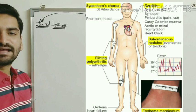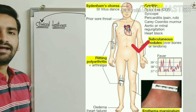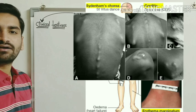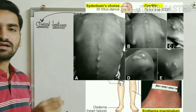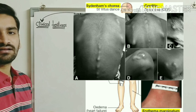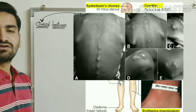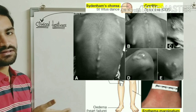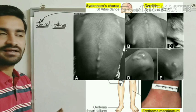Regarding skin lesions, we have subcutaneous nodules and erythema marginatum. Subcutaneous nodules are small nodules of 0.5 to 2 cm in size, mainly developing at the point of joints or tendons. They are painless. These nodules appear very late in the disease and are not used to diagnose it; they are used as a confirmatory sign of acute rheumatic fever.